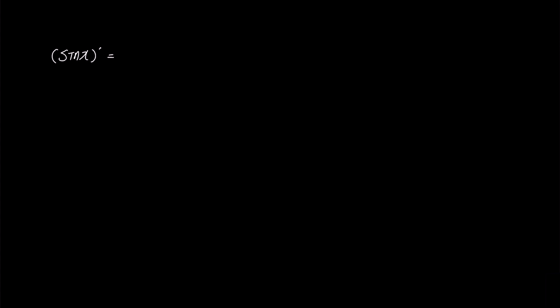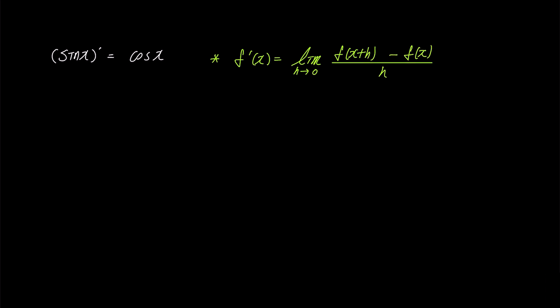Let's begin. First, let's write down the proposition we need to prove: sine x prime is cosine x. Using the limit definition of a derivative, the derivative of f is defined as the limit of f of x plus h minus f of x over h, as h approaches 0. We'll define f of x as the function we want to differentiate: sine x. Therefore, f of x plus h becomes sine of x plus h.